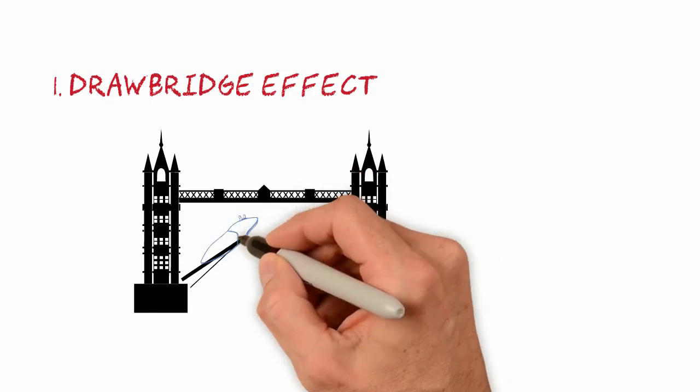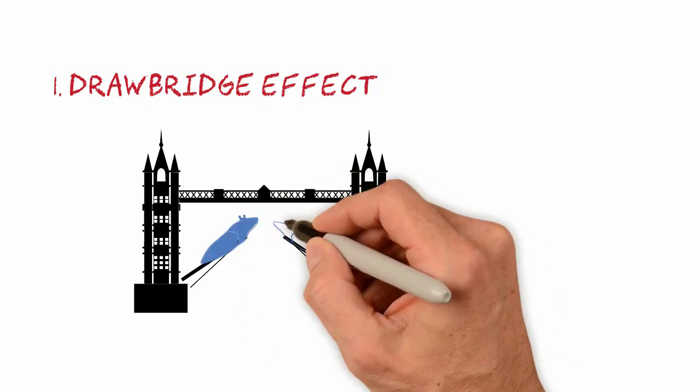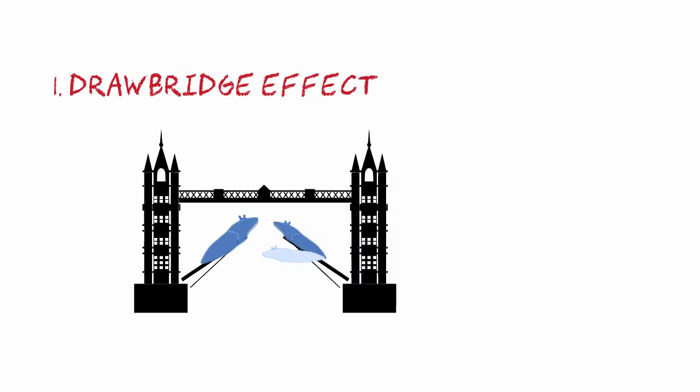The first analogy is the drawbridge effect. When comparing the incisors with two movable bridges, the descent of the bridges would be comparable to the retraction of the crowns, which causes their uprighting and relative extrusion.